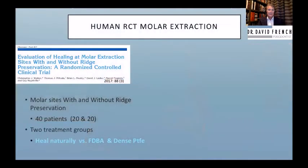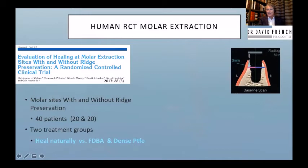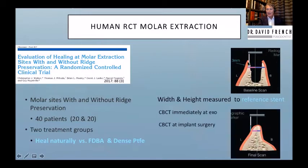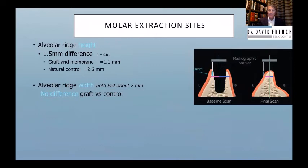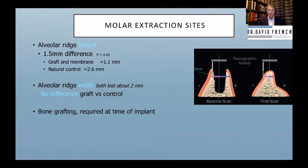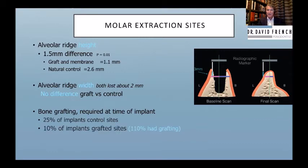Mealy also found that if you don't socket graft, about one in four cases still need a graft at placement. If you do socket graft, still one in ten need a graft — so you're still grafting 10% of sites twice. But 100% of socket-grafted cases have an uncertain future. The 1.5 mm vertical loss is actually often favorable for posterior sites because we need vertical space for the collar, abutment, and material thickness — on a molar I often cut the ridge back slightly anyway to create vertical clearance.